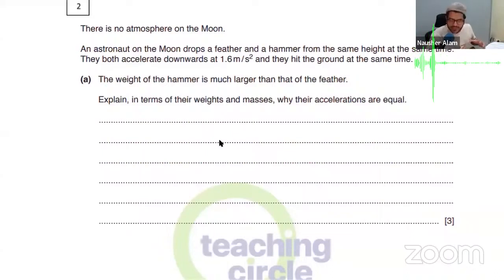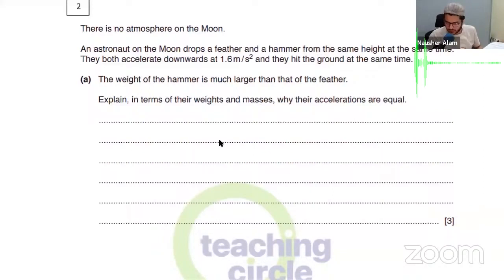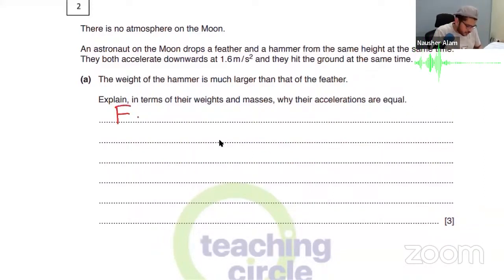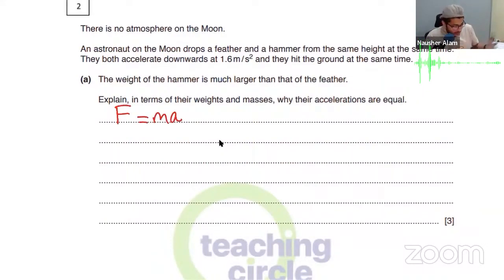It's a little bit related to forces — the next topic — but I'm going to explain it. Do you all know this formula? F equals MA. F stands for force, M stands for mass, and A stands for acceleration. And similarly, W equals MG — where W stands for weight and G stands for acceleration due to gravity.